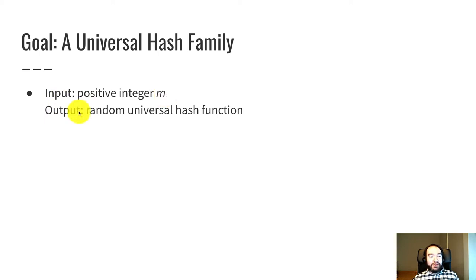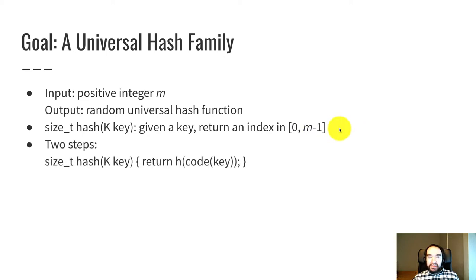And it can produce a random universal hash function that is given a key of some arbitrary key data type k and returns an index in the range 0 through m minus 1. In practice, we break this down into two steps.